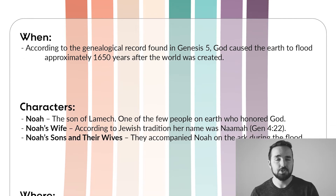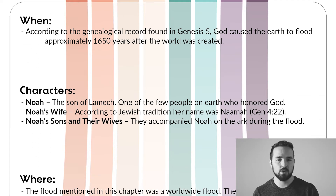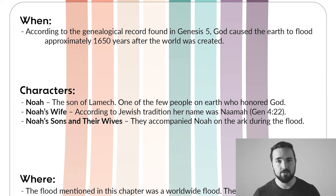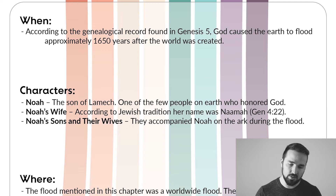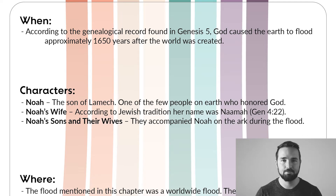Our characters are pretty much the same as the last chapter: Noah. He was the son of Lamech and one of the very few people on earth that still honored God. And then we have Noah's wife — according to Jewish tradition, her name was Nama. And then Noah's sons and their wives, who accompanied Noah on the ark and were saved along with him.